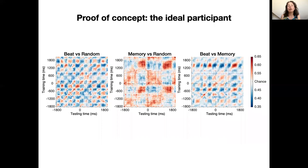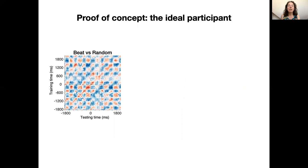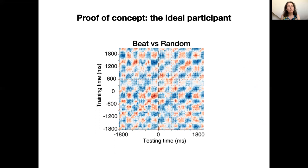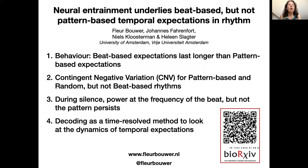Just to show you how this method could actually work for this type of data, here are the same plots from one participant that did show the predicted pattern in the beat-based condition. As you can see here, decoding was not only above chance when training and testing at the same times, but also when training at beat times and testing at different beat times.